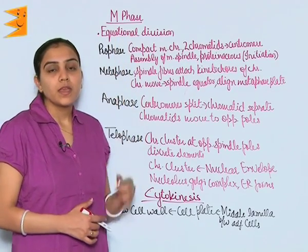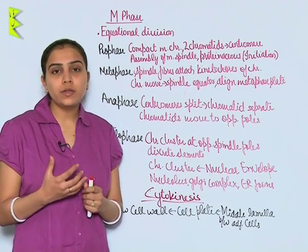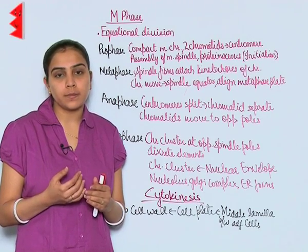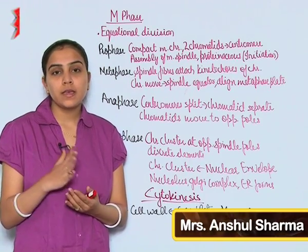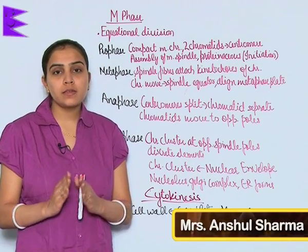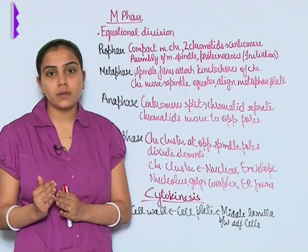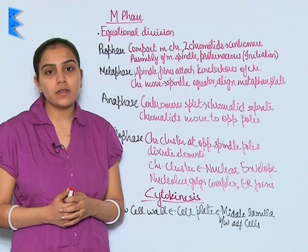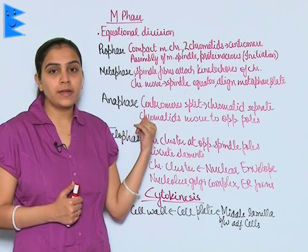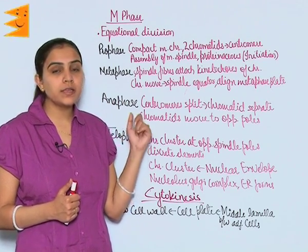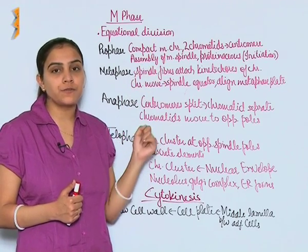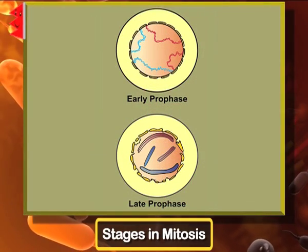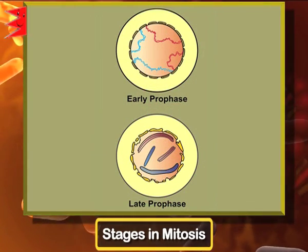In M phase, as you know in mitosis, the number of chromosomes in parents is the same as the number of chromosomes in progeny — that's why it is also known as equational division. Now let us understand through the diagram the various stages or phases of M phase. First is prophase, which is further divided into early prophase and late prophase.